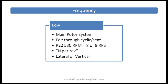Low frequency vibrations are often expressed in N-per-rev, where N equals the number of blades. For example, pilots of two-bladed helicopters like the R-22 are used to feeling a normal 2-per-rev low vibration of the main rotor system. Main rotor vibrations are further defined as either lateral or vertical, or both if you're unlucky.